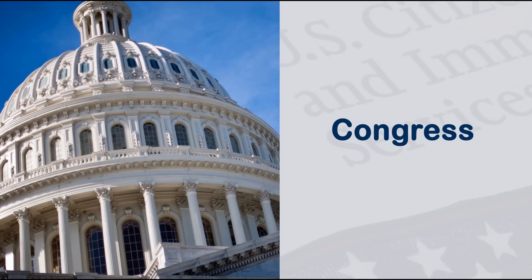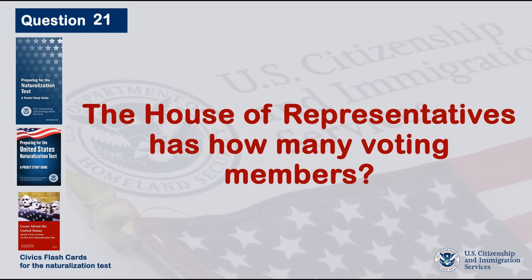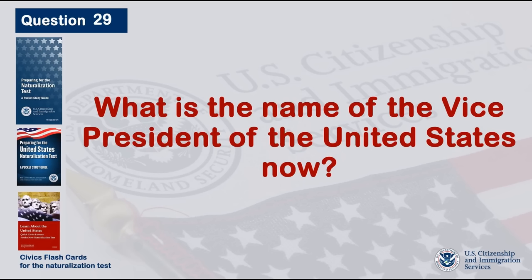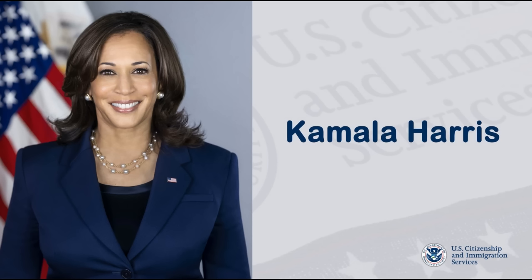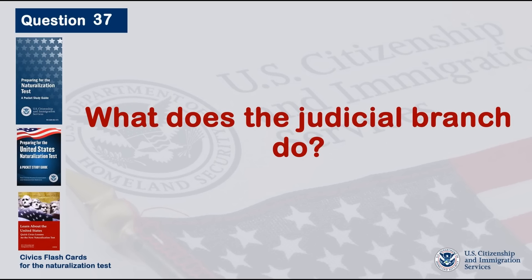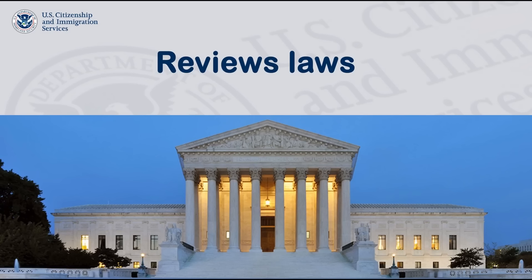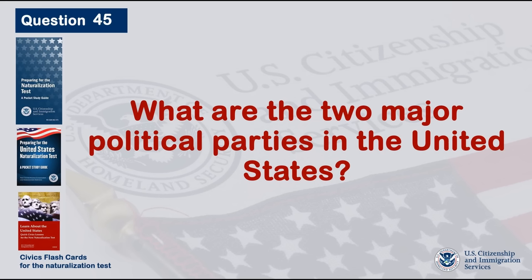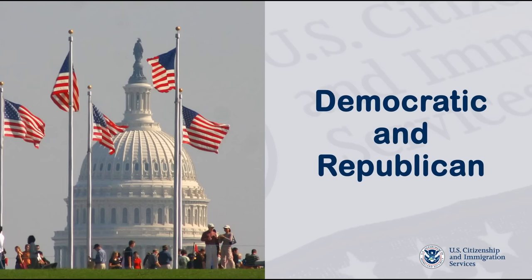Name one branch or part of the government. Congress. The House of Representatives has how many voting members? 435. What is the name of the Vice President of the United States now? Kamala Harris. What does the Judicial Branch do? Reviews laws. What are the two major political parties in the United States? Democratic and Republican.